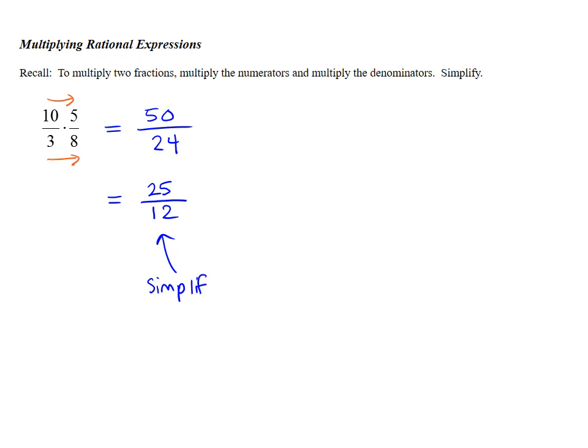Now, there is another way to do this, and it only works with multiplication. And that is, when we have the initial problem, 10 over 3 times 5 over 8, we can also rewrite this by thinking about factors that are in common right from the get-go.